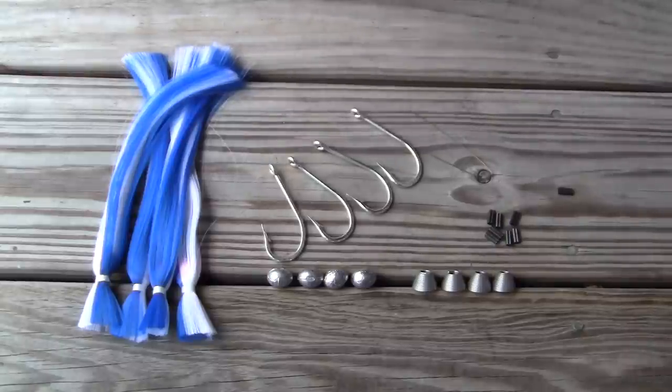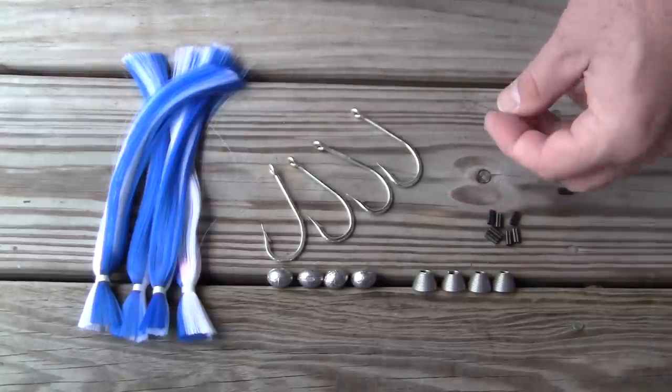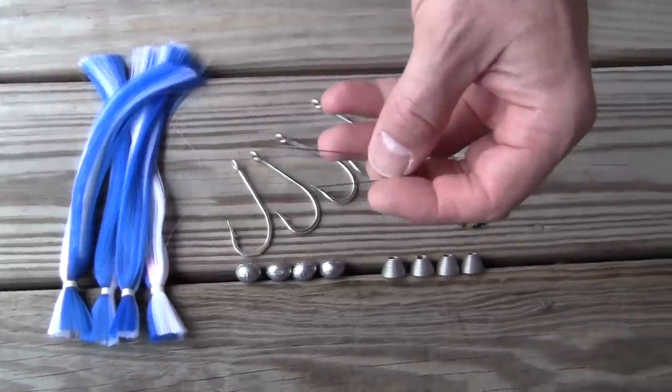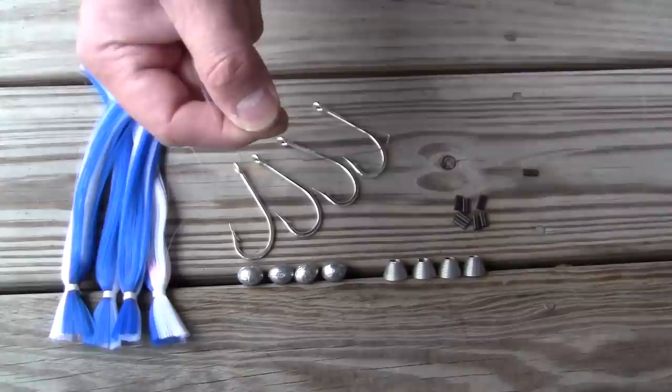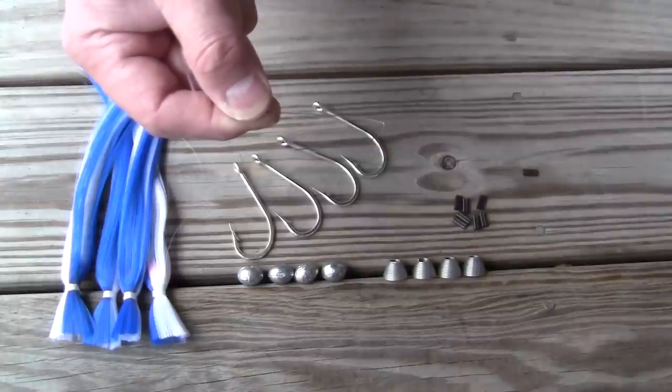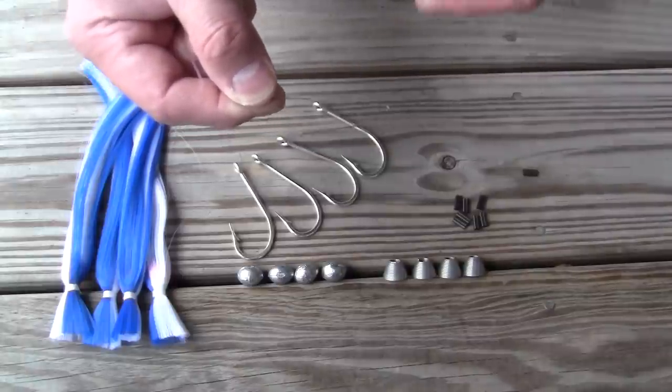What makes this different from the other Ballyhoo Rigs is we're going to insert a loop of wire and it's going to encompass the hook along with the monofilament. So when a fish chews on it, it's going to last a little bit longer.